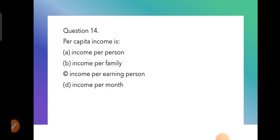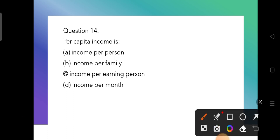Question 14: Per capita income is — income per person, income per family, income per earning person, or income per month? The answer is income per person. We calculate it by dividing total national income by total population, which includes everyone from newborns to 100-year-olds.